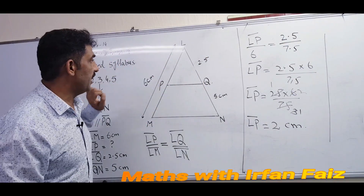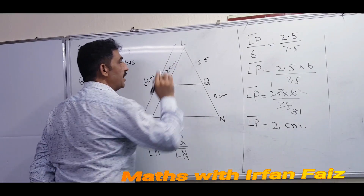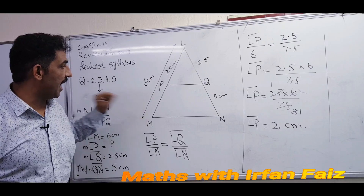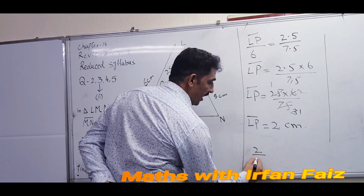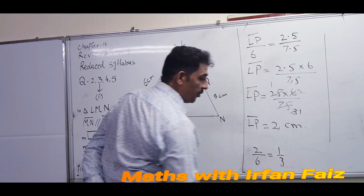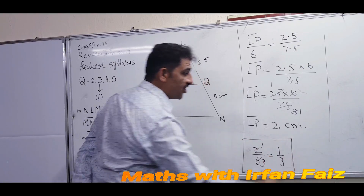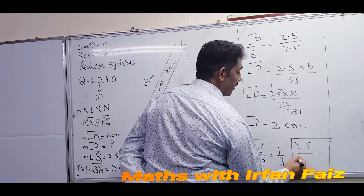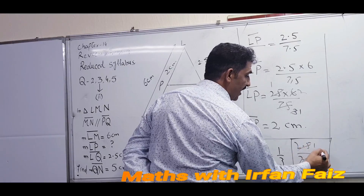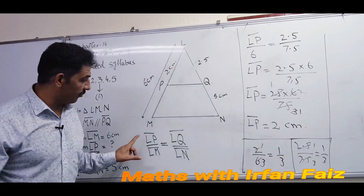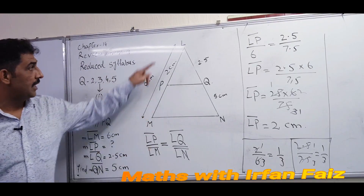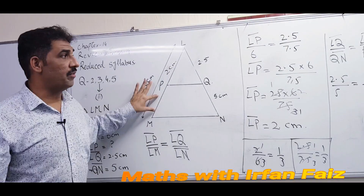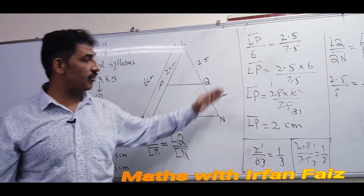To verify the answer: LQ over LN is 2.5 over 7.5, which simplifies to 1 over 3. Now checking LP over LM: LP is 2 and total length LM is 6, so that is also 1 over 3. Both ratios match, confirming LP equals 2 centimeters is correct. This is why it is better to use this formula when values on both sides need to be verified.